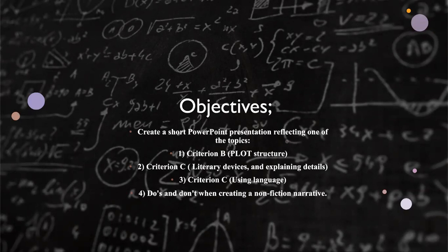Whereas Group C will focus on Criterion D, which is using language. So here you're going to explain how I can reduce errors in punctuation, syntax, grammar, embed the use of sophisticated diction and so on.